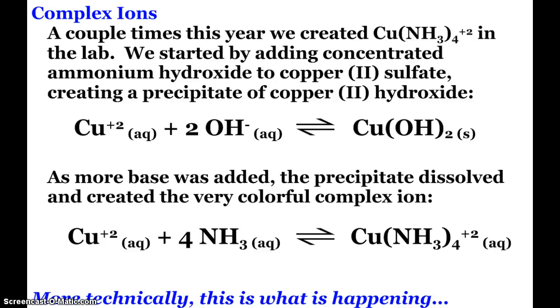And so a couple times this year we did create that copper ammonia ion in lab. This is when we were adding concentrated ammonium hydroxide to copper 2 sulfate and when that started happening we first created the precipitate of copper 2 hydroxide. When we kept adding more base all of a sudden the precipitate disappeared and we had that beautiful dark blue indigo complex ion color that was created.